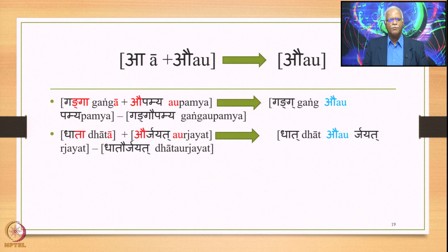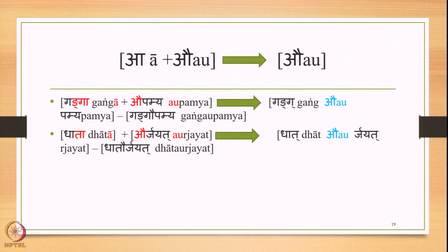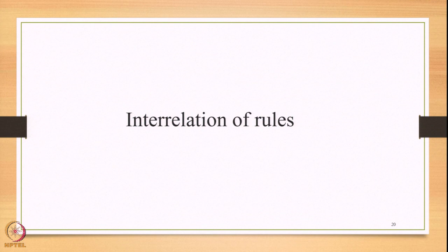It is important to remember that in applying 6.1.88, we also applied Uddeshya Vidhaya Bhava and Anudit Savaranasya Cha Pratyaya — so A stands for both short A and long Ā, covering all these examples. Now let us look at the interrelation of rules — specifically between 6.1.88 and Engi Pararupam (6.1.94).